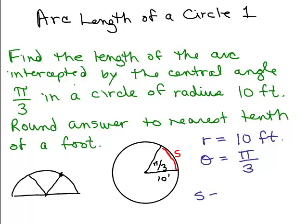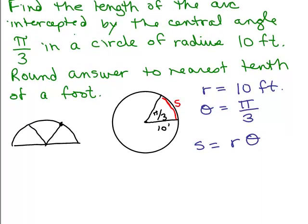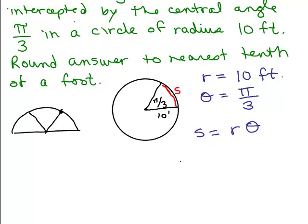And we know the formula is S equals, well I'm going to do it as R theta. You could write it as theta times R, it really doesn't make any difference. So let's just plug it in. And I need a little space here. So S equals, what am I going to plug in for R? 10 feet. Now I'm going to leave the feet off for the moment, times pi over 3, and just put the feet over here because having the feet in the middle could confuse some people.